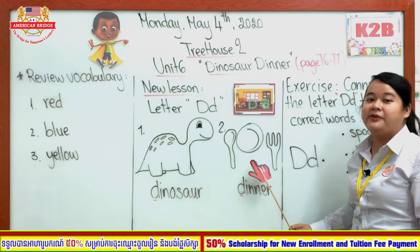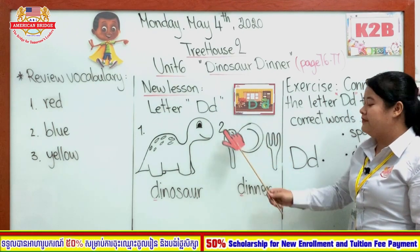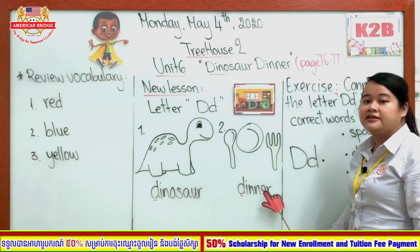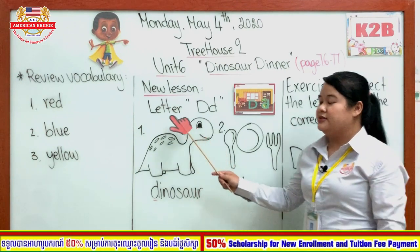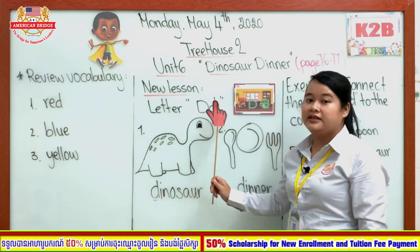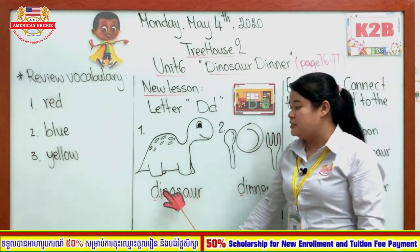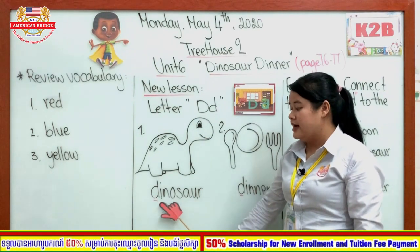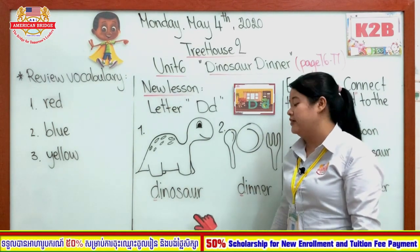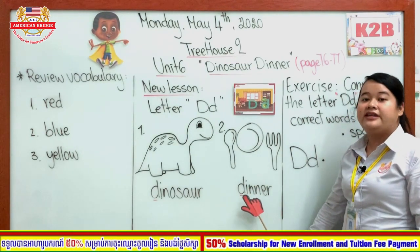The second picture — what is this, everyone? Very good. This one is dinner. D for dinner. Repeat after me: D for dinner — D-I-N-N-E-R. Dinner. Let's repeat after me again: Letter D. Dinosaur — D-I-N-O-S-A-U-R. Dinner — D-I-N-N-E-R. Very good! Clap your hands for yourself.